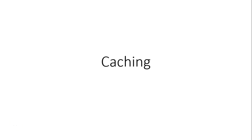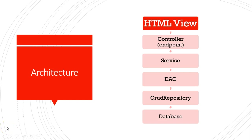In this video, we're going to explore caching in Spring Boot using a simple example. One thing we want to think about is where is the optimal place to put a cache. Here I have an architecture that we'd often see in a Spring Boot microservices application, where we have some kind of HTML view, and then under that we have an endpoint that's defined in a controller.